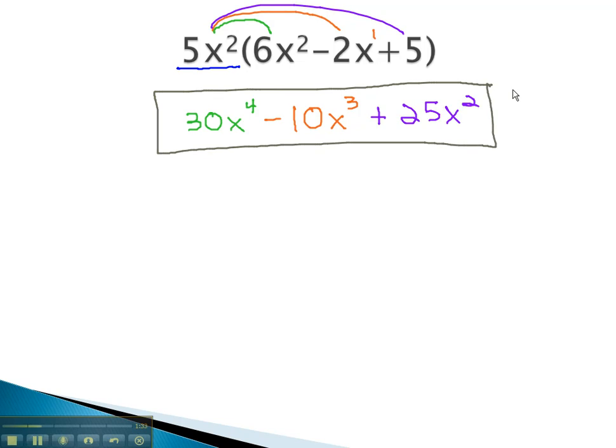Notice, as we were multiplying, the exponents changed. When multiplying, we add the exponents. Let's try another example, where we have to distribute and use our exponent properties.